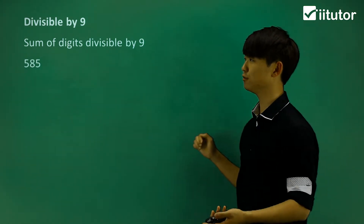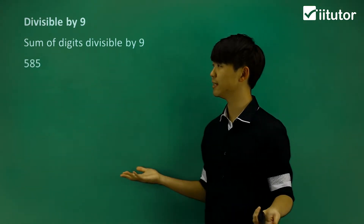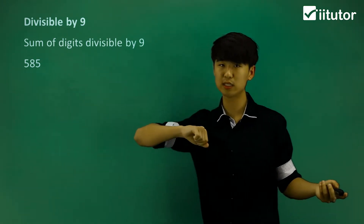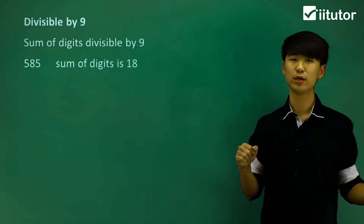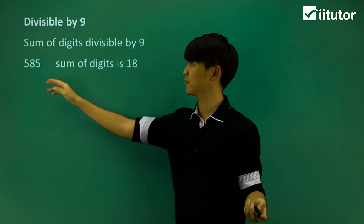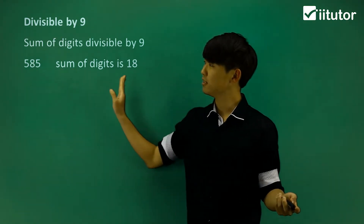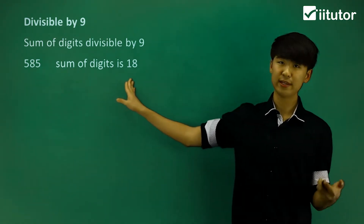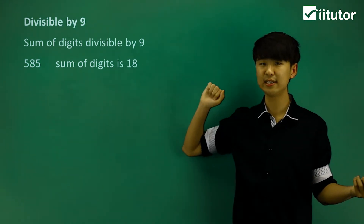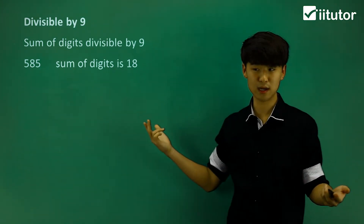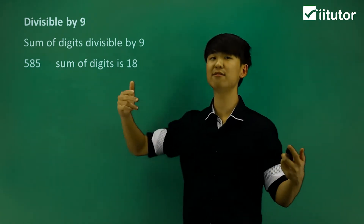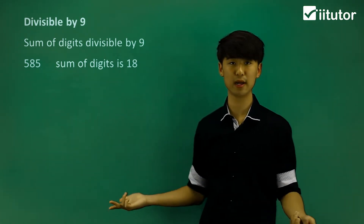Some examples include 585. If we take a look at the sum of the digits there, we have 5 plus 8 plus 5, giving us a sum of the digits of 18. So 18 is divisible by 9. That means 585, the number itself, is also divisible by 9.